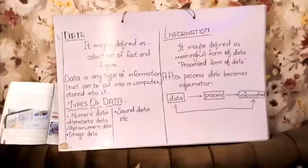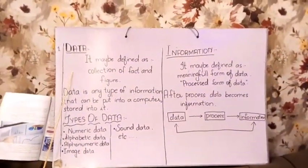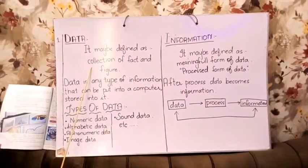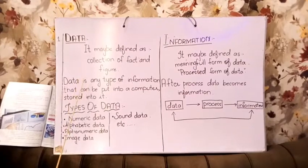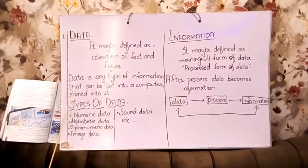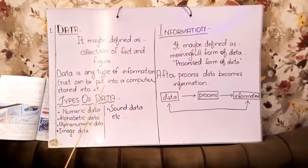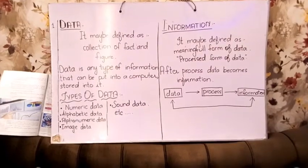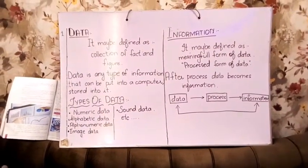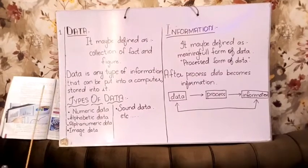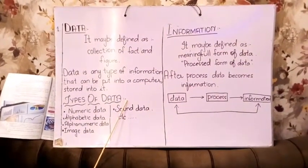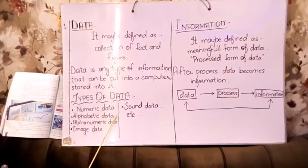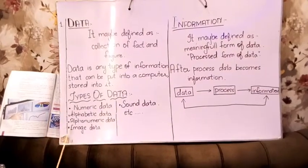What is data? It may be defined as a collection of facts and figures. Data is any type of information that can be put into a computer and stored in it. You enter different types of data into a computer. Numeric data includes numbers. Alphabetic data includes alphabets.